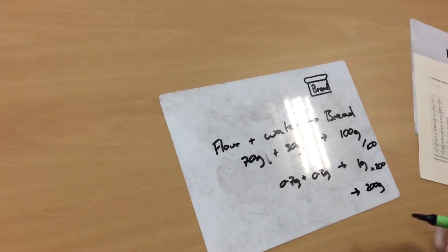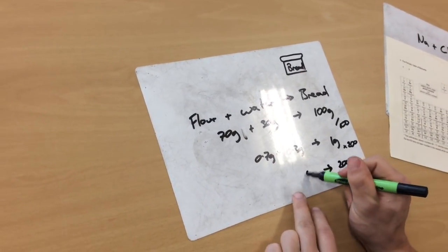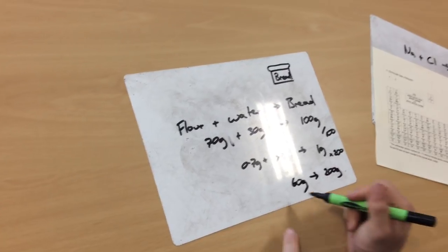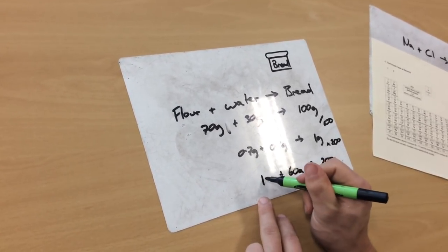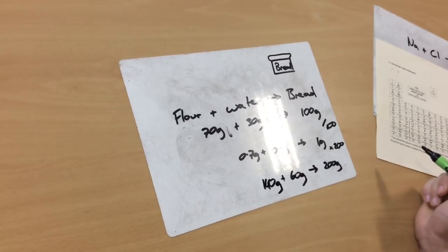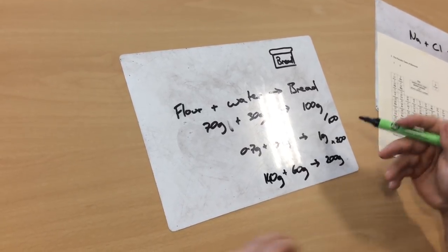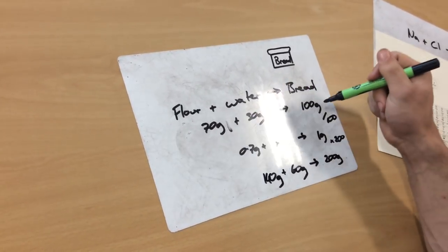And how much water will I need? Well, I'll need 60 grams of water this time. And how much flour? Well, I'll need 140 grams of flour. And that tells me for 200. And you'd expect that anyway. You'd just double that because you want 200.